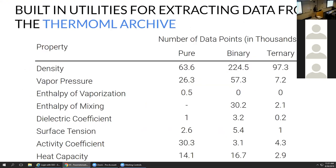I won't say too much about this because Michael will talk about it more. Essentially, the first release has been based on trying to optimize data from the ThermoML archive, which contains a vast number of thermodynamic properties — hundreds of thousands of densities, tens of thousands of mixture properties. The first thing I did was build a utility to go into ThermoML and pull all of this data down.